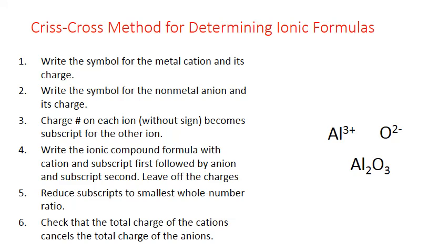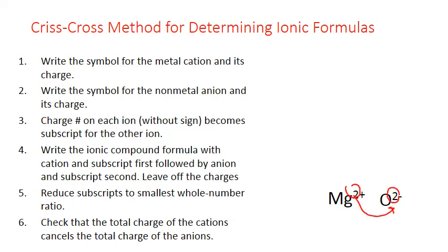Let's look at one final example, combining magnesium and oxygen. Magnesium is another alkaline earth metal from column 2, so we have an ion with a +2 charge, and oxygen is −2. Crisscrossing the charge numbers gives a subscript of 2 on both magnesium and oxygen, producing MgO₂... wait — MG₂O₂. But this is not the lowest whole number ratio; a 2-to-2 ratio reduces to 1-to-1. So the final formula is MgO.